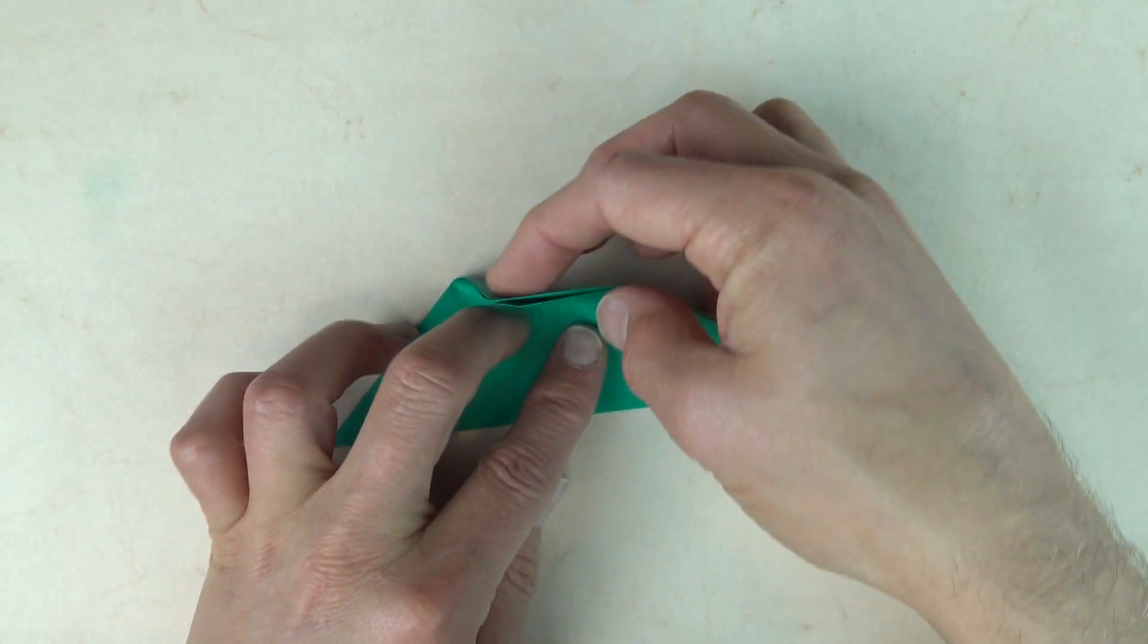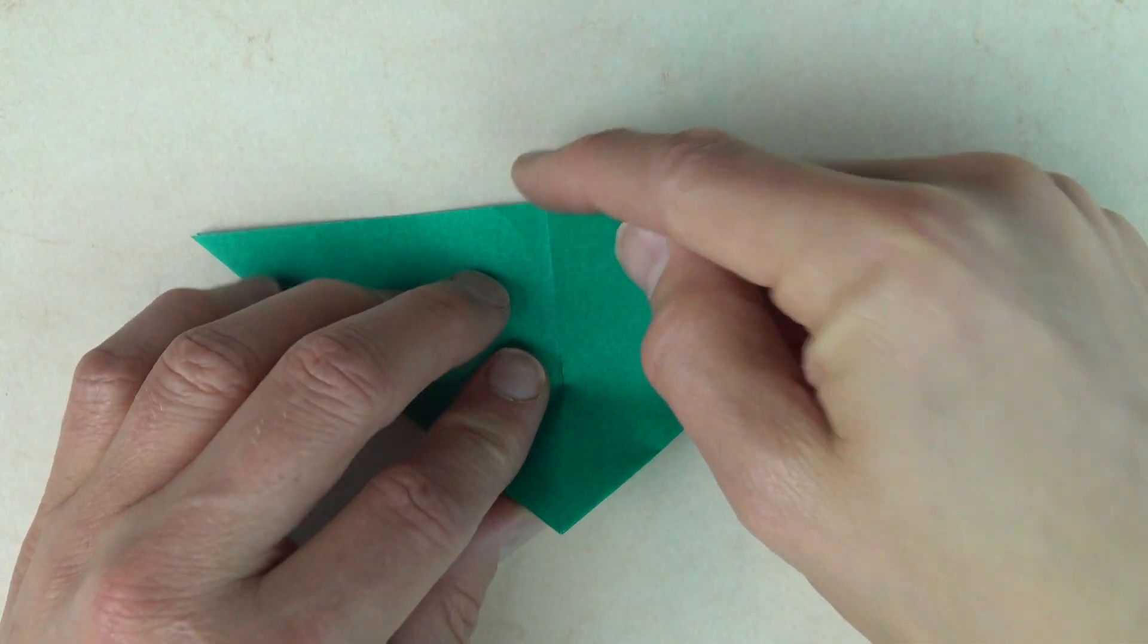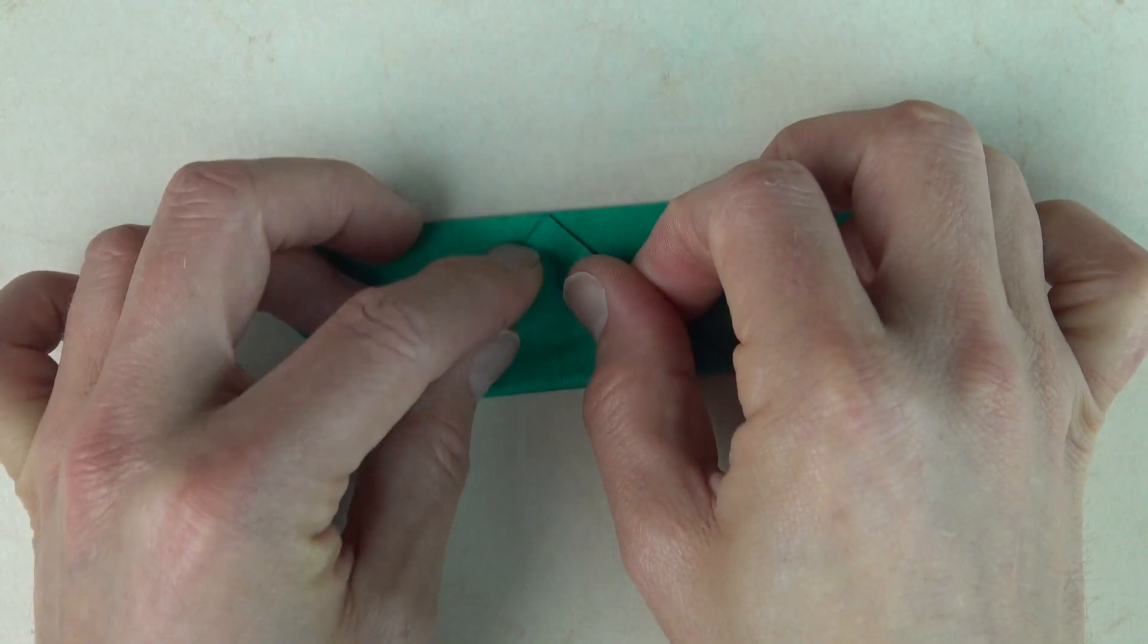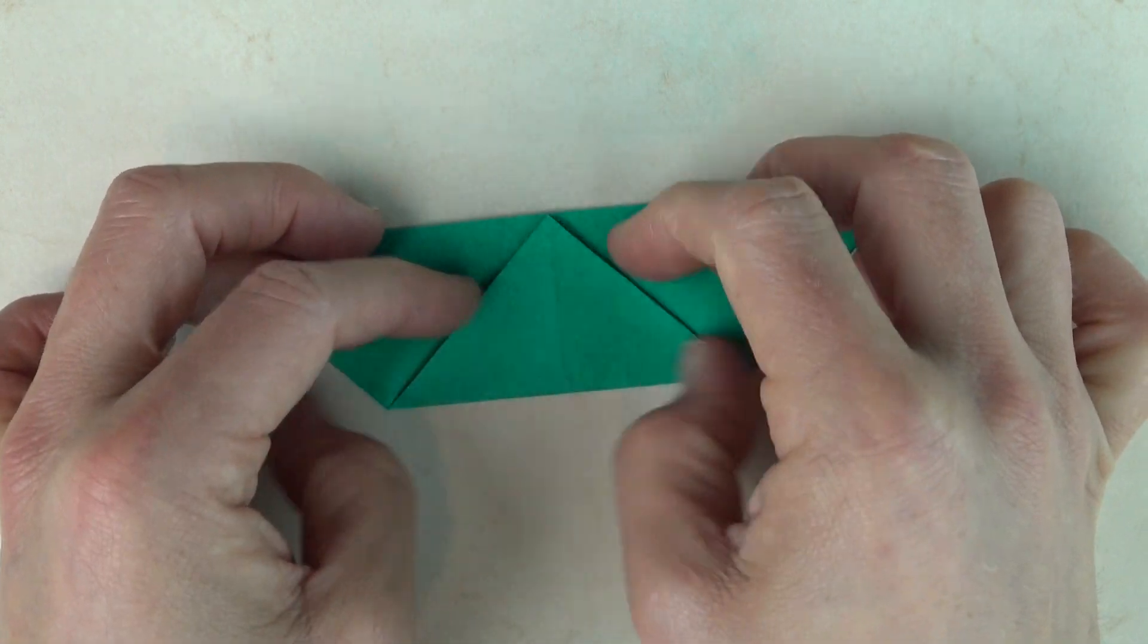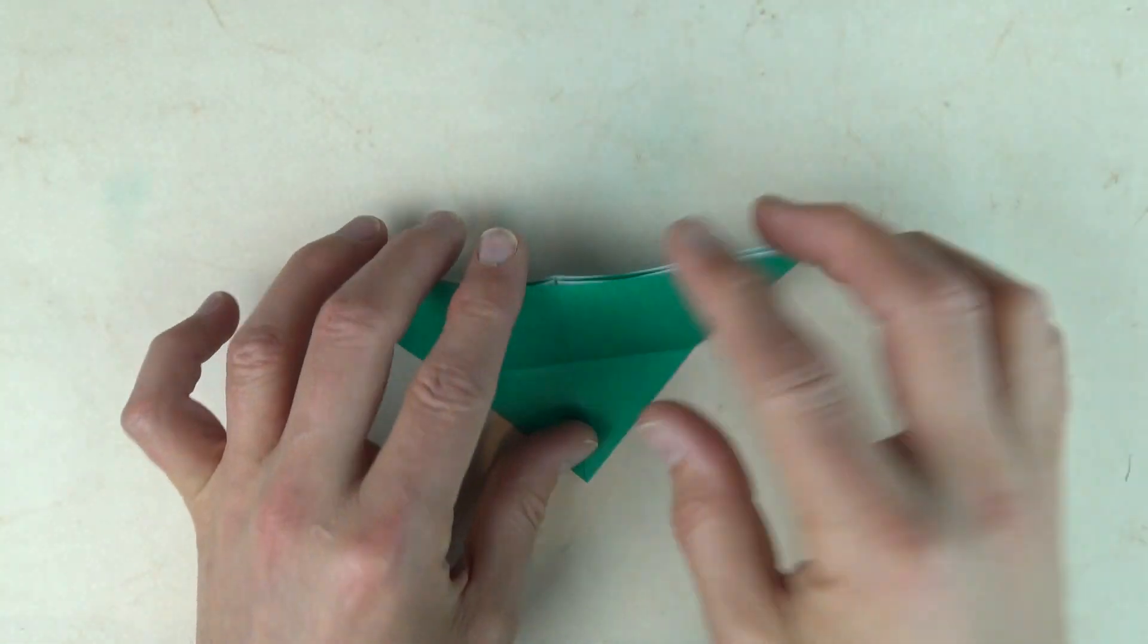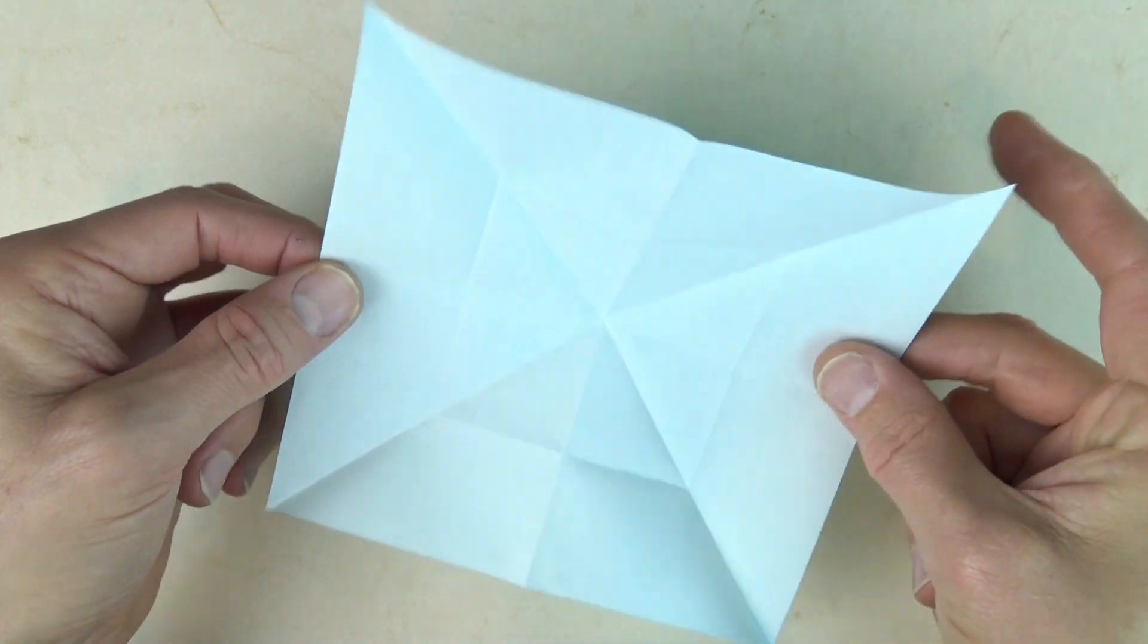And now we're going to sink the top. So rotate. And fold the corner to this point. And now completely unfold.